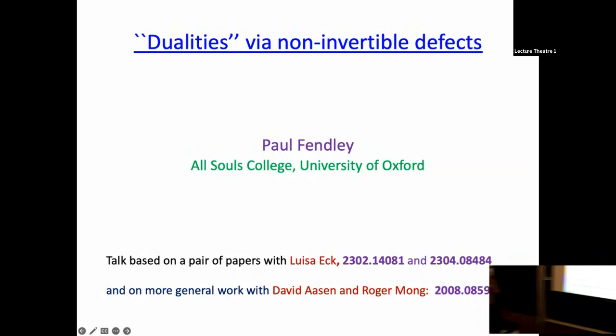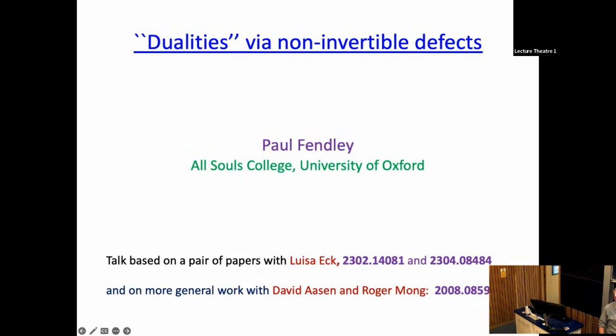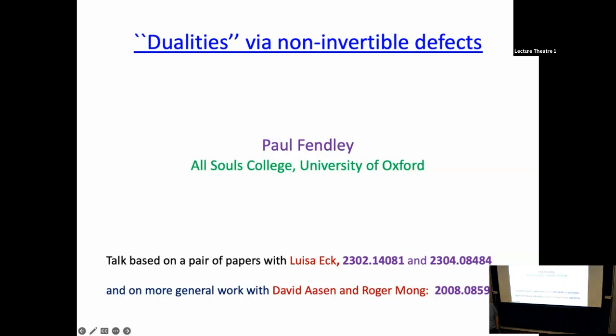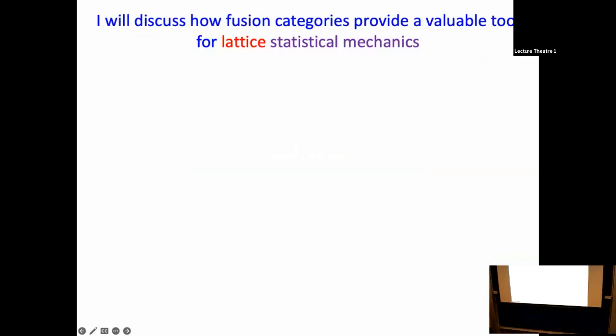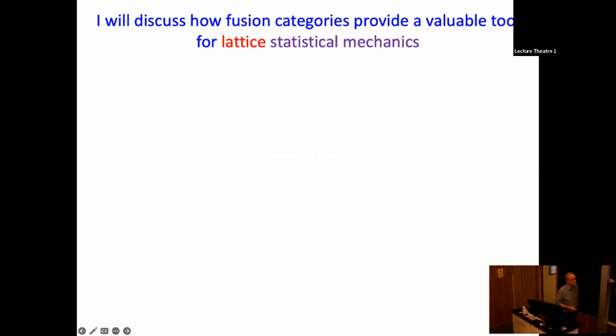There's a title, and if you don't know what those words mean, hopefully I will explain that throughout the talk. I'll explain in a little more detail what we did in these papers, but the main bulk of the talk is on a couple of recent papers with Lizak, who's a student at Oxford, and then there's a very long paper with David Mason and Roger Bong that I'll touch on too. The overall message of my talk is that fusion categories provide a valuable tool for lattice statistical mechanics.